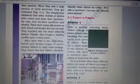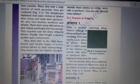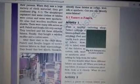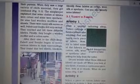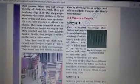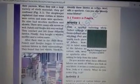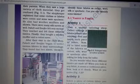Next is Variety in Fabrics. Look how many types of fabrics we have. The first activity is to visit a nearby tailoring shop. Collect cuttings of fabrics left over after stitching. Feel and touch each piece of fabric. Now try to label some of the fabrics as cotton, silk, wool or synthetic after asking for help from the tailor.